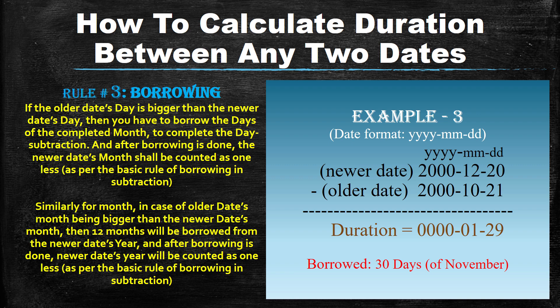After borrowing is done, the newer date's month shall be counted as one less, as per the basic rule of borrowing in subtraction. Similarly for month: in case the older date's month is bigger than the newer date's month, then 12 months will be borrowed from the newer date's year.